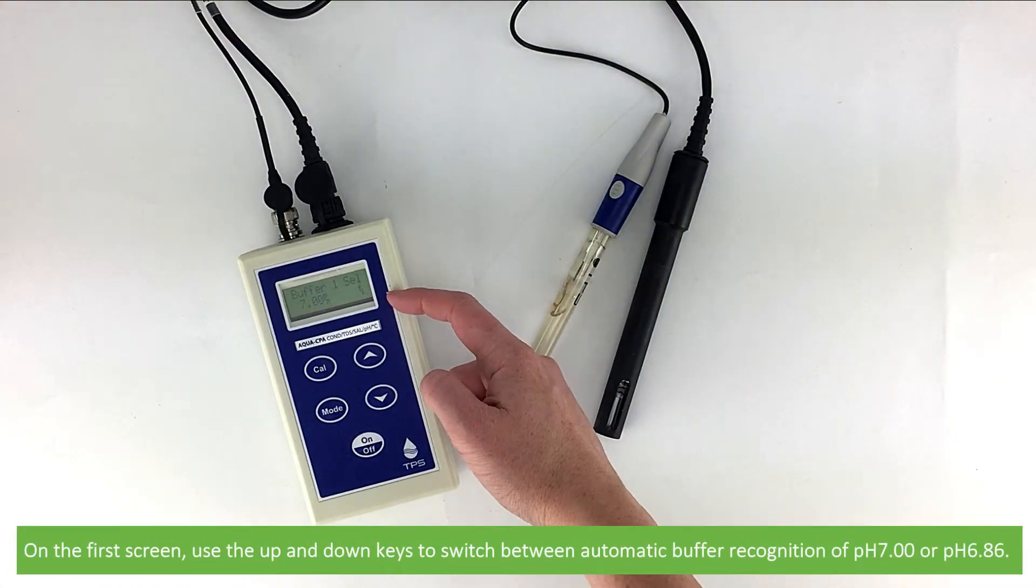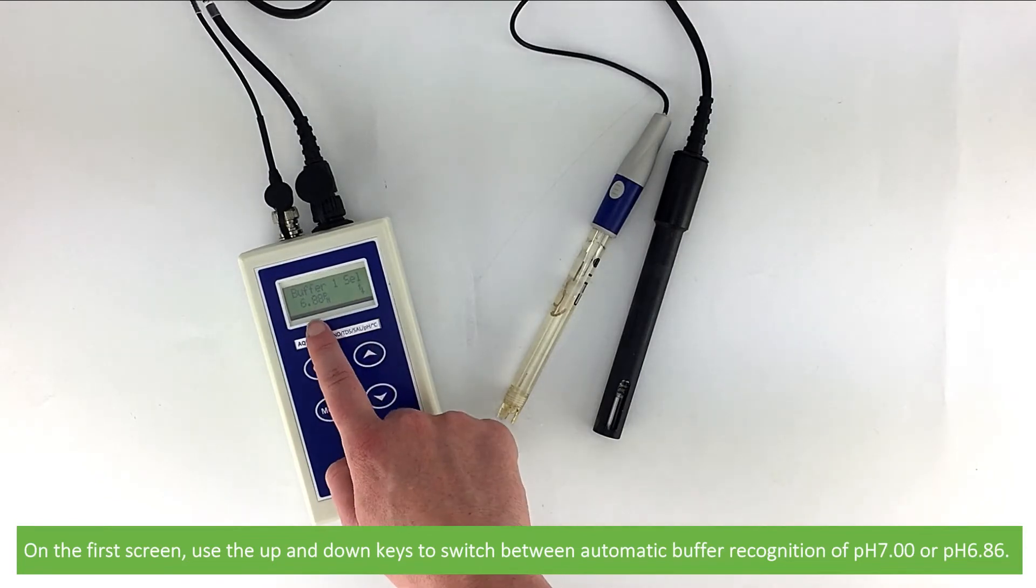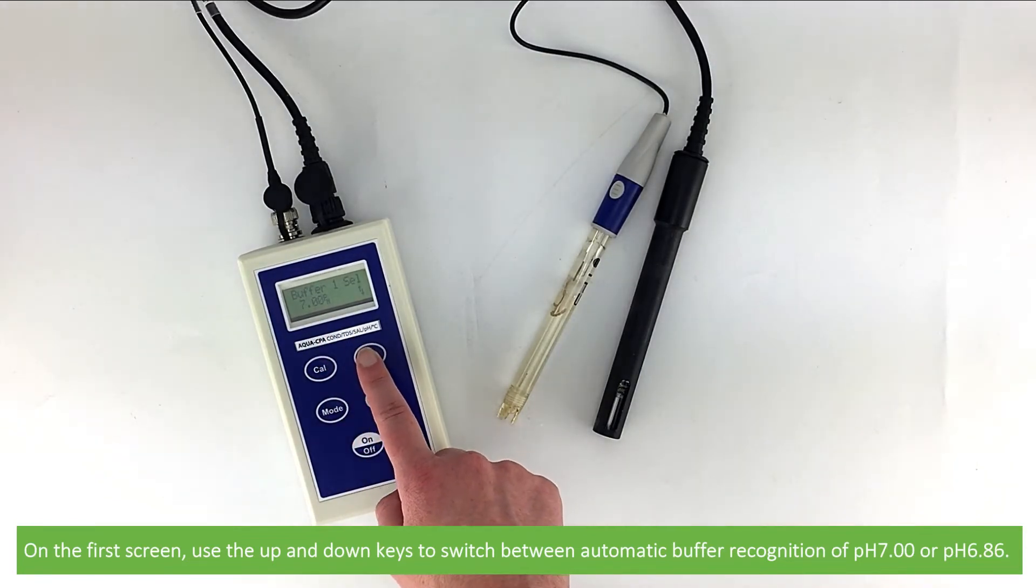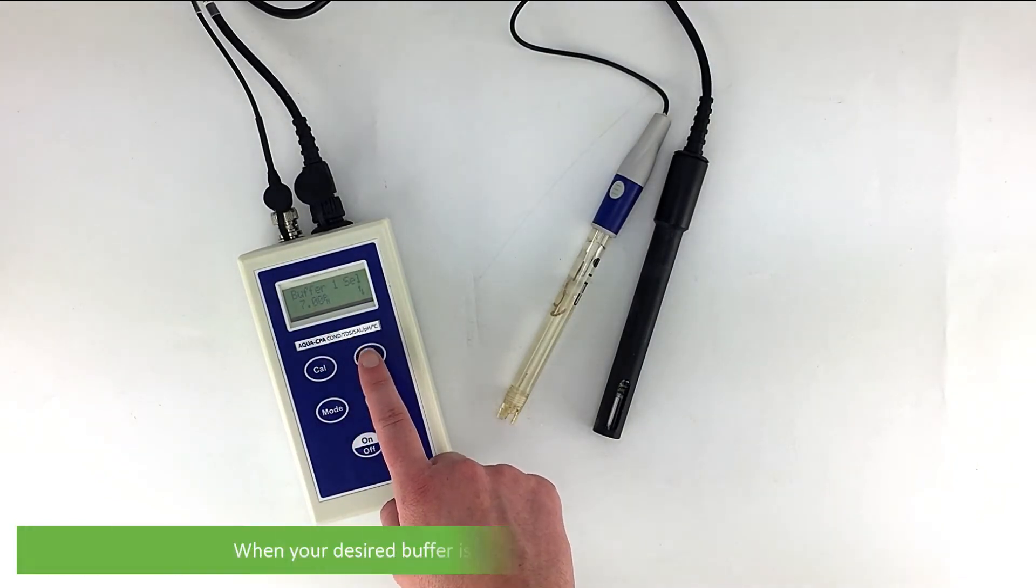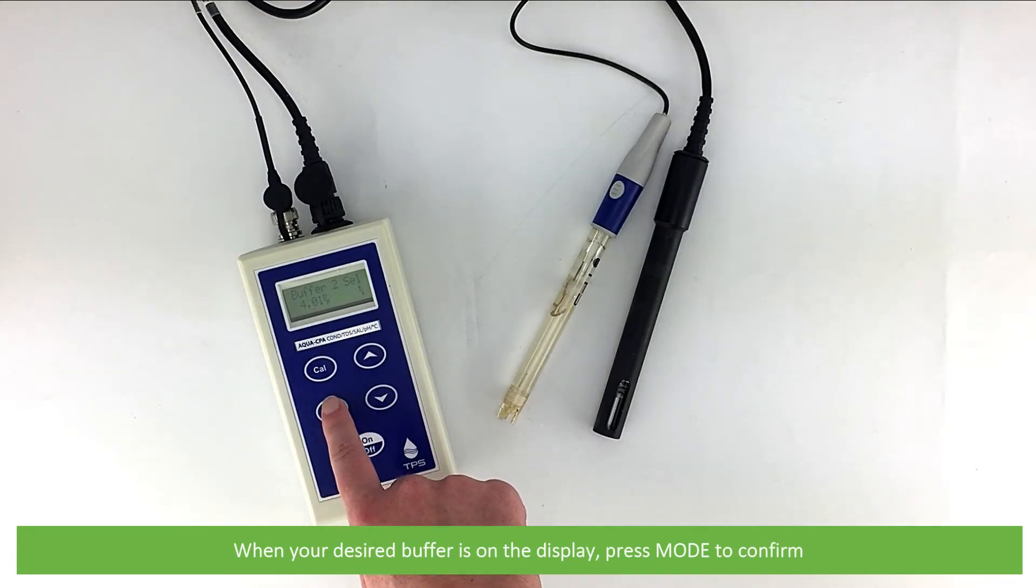On the first screen, use the up and down keys to switch between automatic buffer recognition of pH 7 or pH 6.86. When your desired buffer is on the display, press mode to confirm.